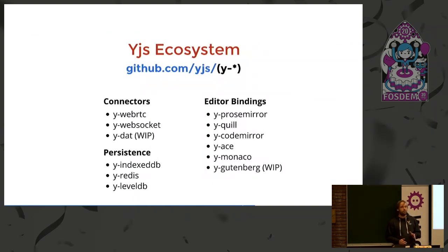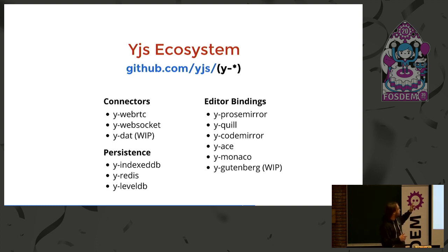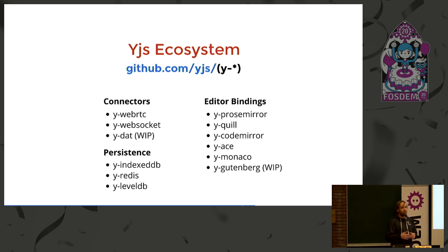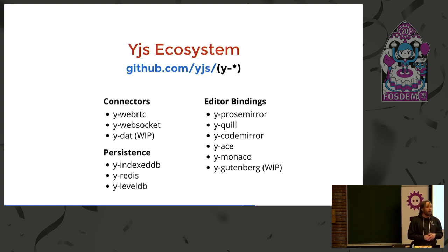There's a huge ecosystem of modules that work together with YJS, which I put into three categories — and these are only the officially supported modules. There are the connectors, which are about how you connect and share your data using different communication protocols. There are the persistence adapters that store the data in a database — server-side in LevelDB, or browser-side in IndexedDB. And then there are the data bindings, in this case editor bindings. YJS supports five editors, including ProseMirror, Quill, and several code editors.